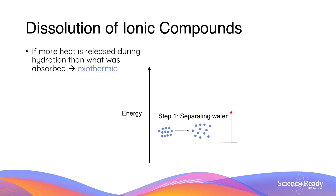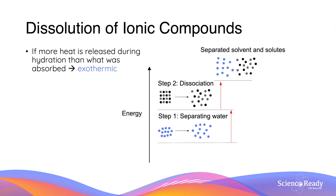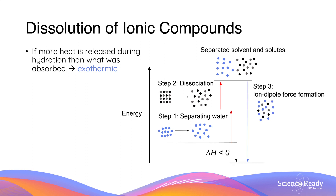Using the energy diagram again to analyze the exothermic case: the energy of the system still increases during the first two stages. However, this time, more energy is released during hydration than the total energy absorbed. This causes the energy in the system to be lower at the end of dissolution compared to the beginning, making the overall process exothermic. The dissolution of an ionic compound can therefore be either endothermic or exothermic — it ultimately depends on how much energy is absorbed and released in each of the three processes.